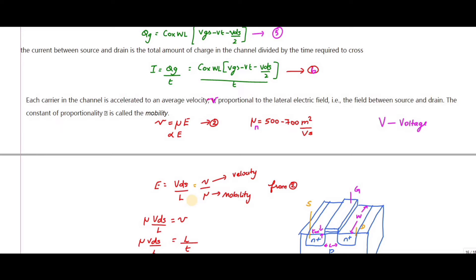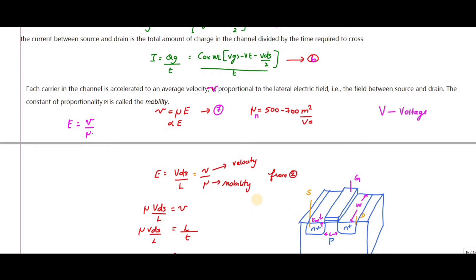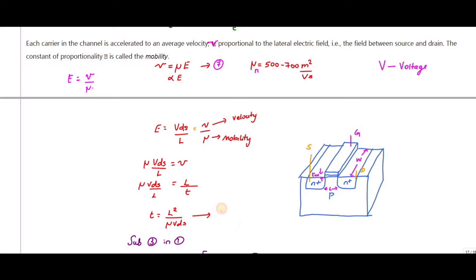From the seventh equation, E = v/μ, so V_DS/L = velocity/mobility. Rearranging, velocity = μ × V_DS / L. Since velocity = distance/time = L/t, we can write t = L² / (μ × V_DS). This is the eighth equation, giving us the transit time across the channel.